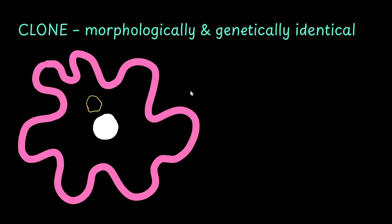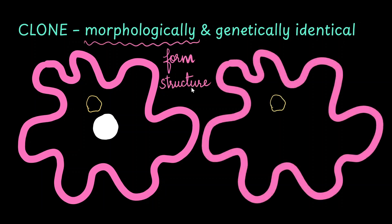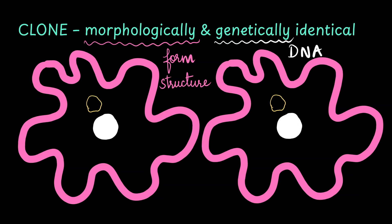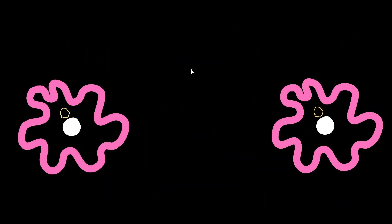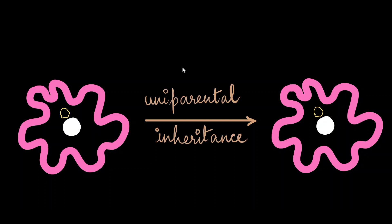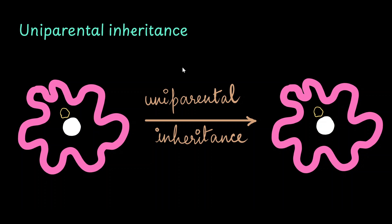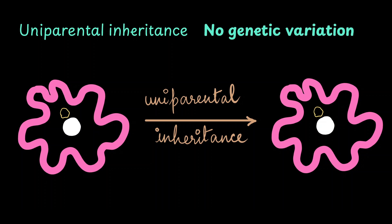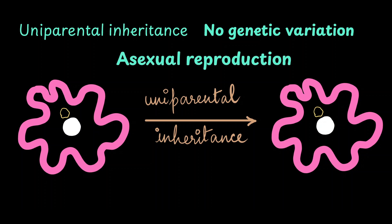A clone is a morphologically and genetically identical organism. When I say morphologically, I mean the shape, structure, form — the outer appearance of the organism — and genetically means the DNA it possesses in the nucleus. Because the DNA comes from the single parent to the progeny, this is called uniparental inheritance. When you compare the DNA between the progeny and the parent, you can see that there are no genetic variations. This sort of reproduction seen in protozoans is called asexual reproduction.